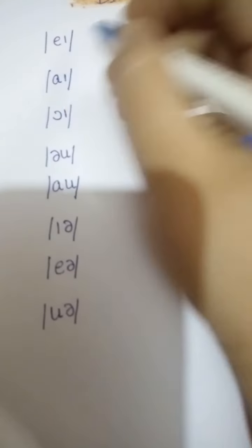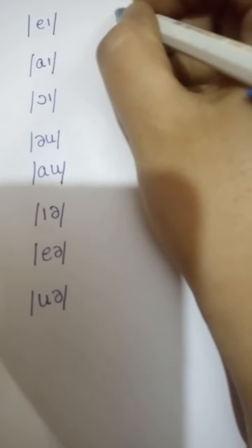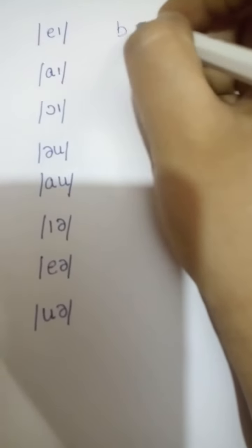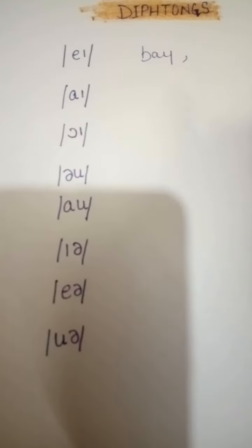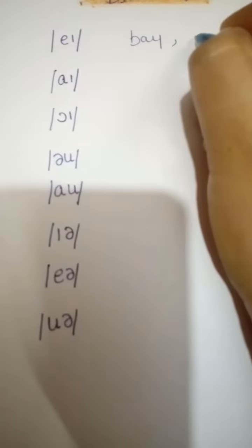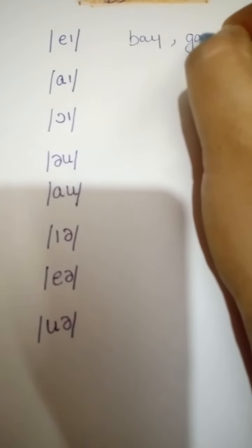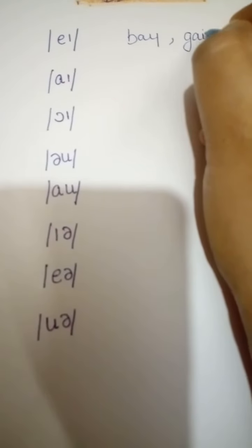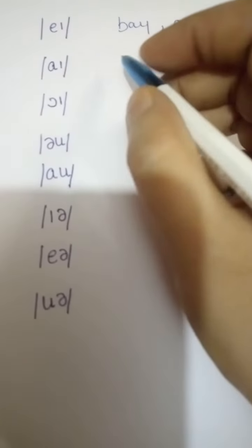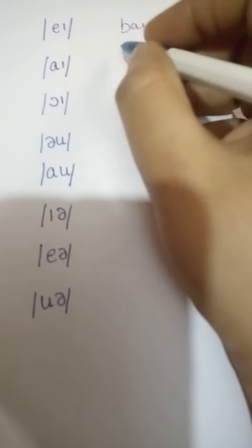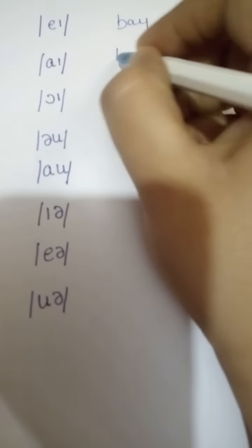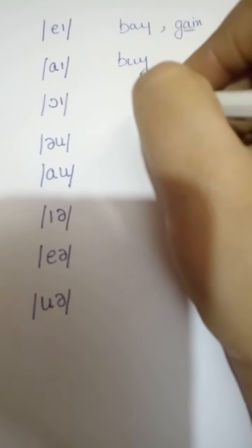The first diphthong is the 'ay' sound as in 'bay' and 'gain.' The next is the 'i' sound as in 'buy' and 'rice.'